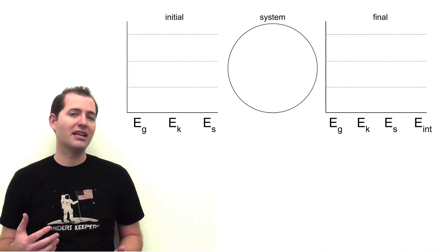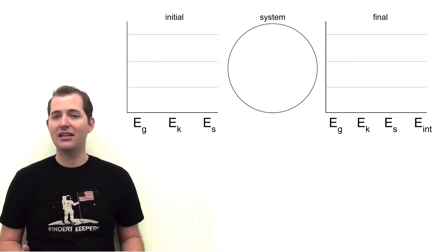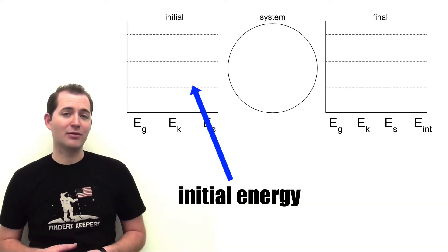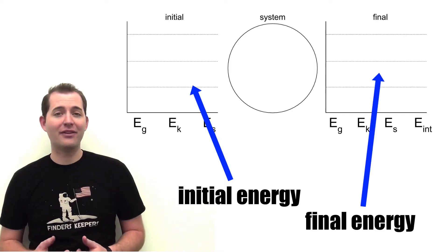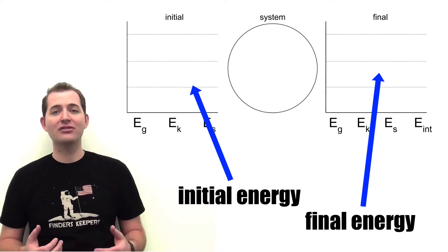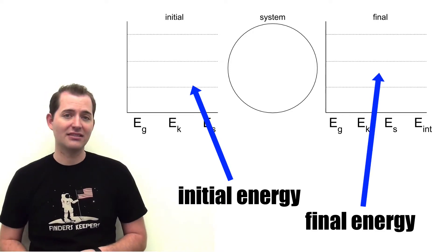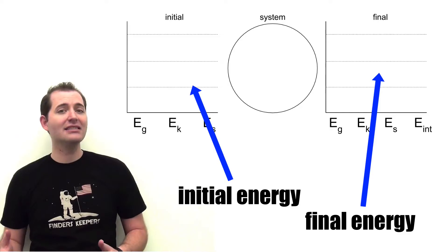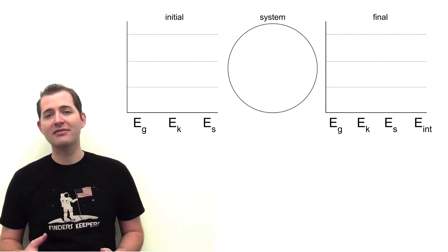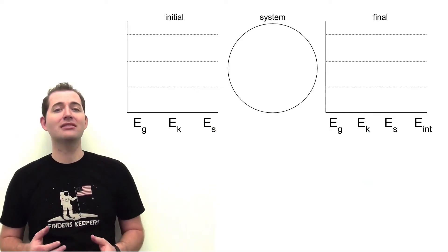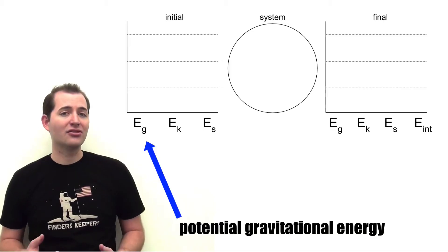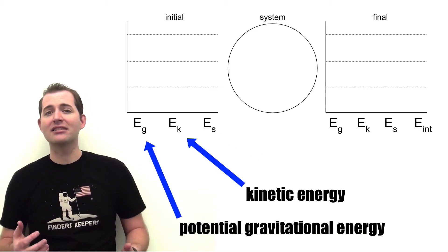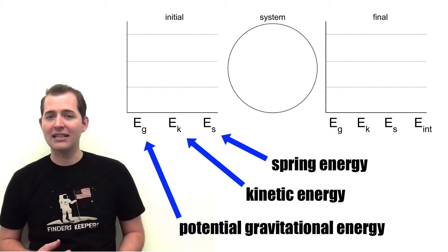These diagrams have a standard format which you can see here. The graph on the left is used to represent the initial energy in the system, and the graph on the right is used to represent the final energy in the system. In these examples we will use three types of energy labeled across the bottom of each graph: potential gravitational energy, kinetic energy, and spring or elastic energy.